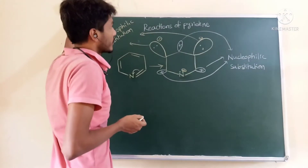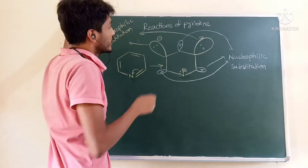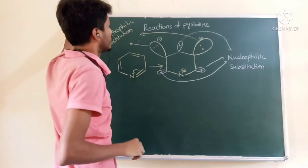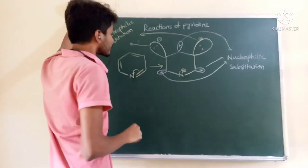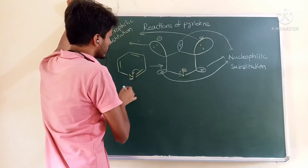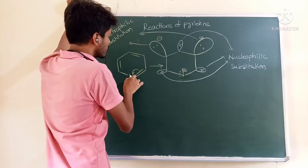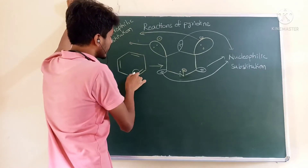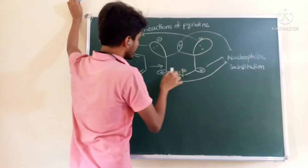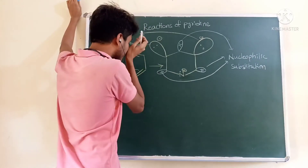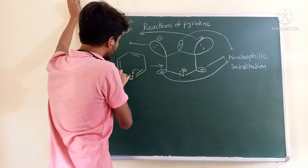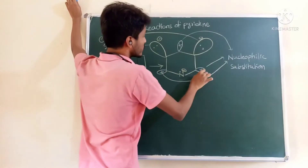The topic is reactions of pyridine. Pyridine is a heterocyclic compound containing nitrogen. Nitrogen is more electronegative, hence it will withdraw electrons from the ring. When nitrogen takes electrons from the ring, the carbons get a positive charge.